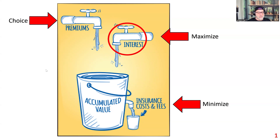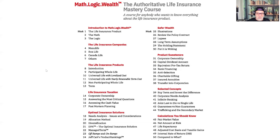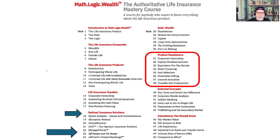Each product offers different opportunities, and collaborative intelligence helps us discover these product-specific strategies. Optimization is done through what we call sweeteners and micro-sweeteners. Major sweeteners are covered throughout our course — we even have a section, classes 31 to 38, that focuses entirely on product sweeteners. Micro-sweeteners are smaller features that can significantly impact outcomes. The challenge is these change constantly, and no individual advisor can track all the variations across all companies all the time. This drives our collaborative intelligence approach. Our complete 50-week course outline covers corporate ownership, capital dividend account, bank financing, and more — demonstrating why sweeteners require collaborative intelligence. Week 23 sits right at the transition between foundational knowledge and advanced optimization strategies.